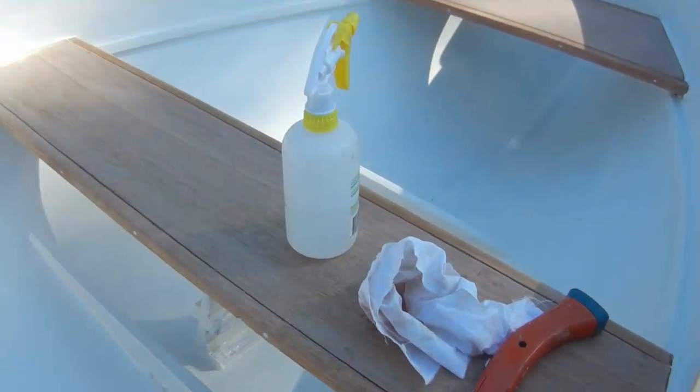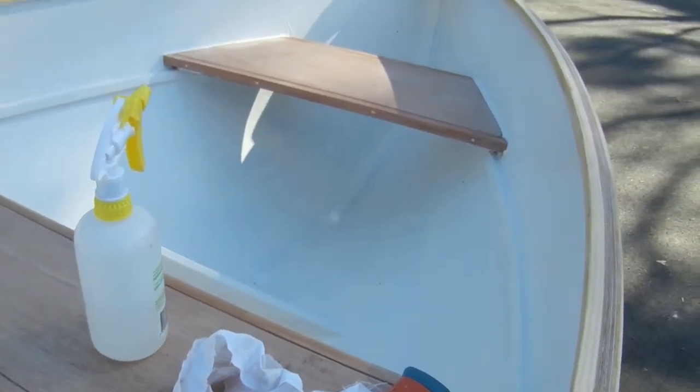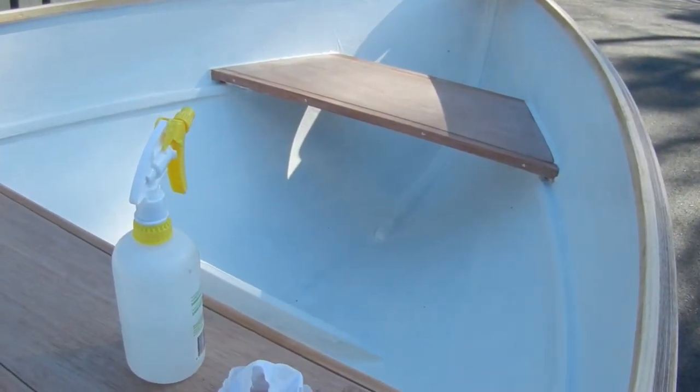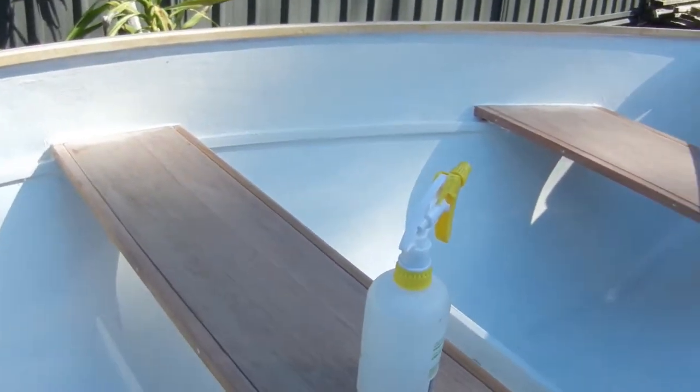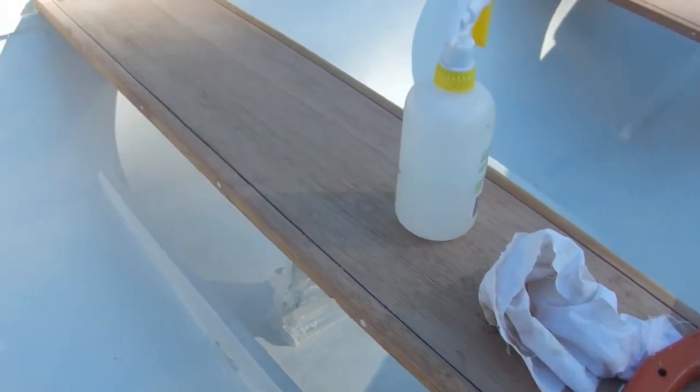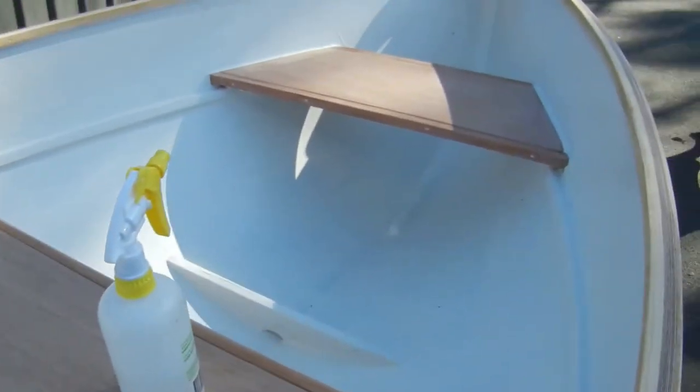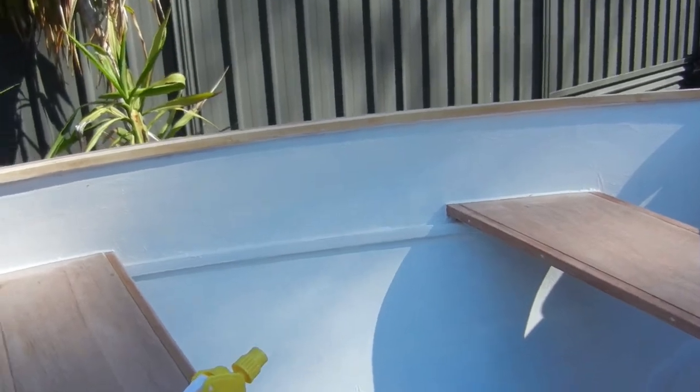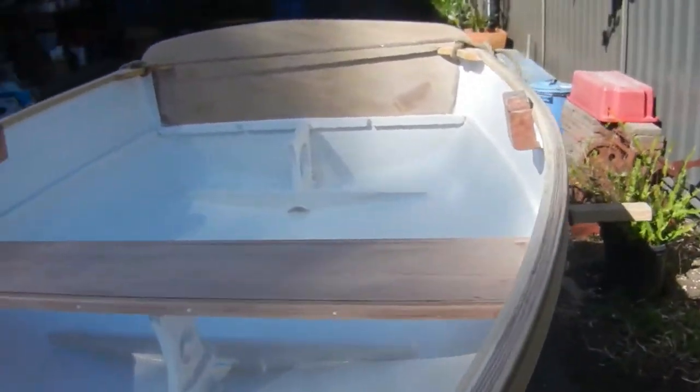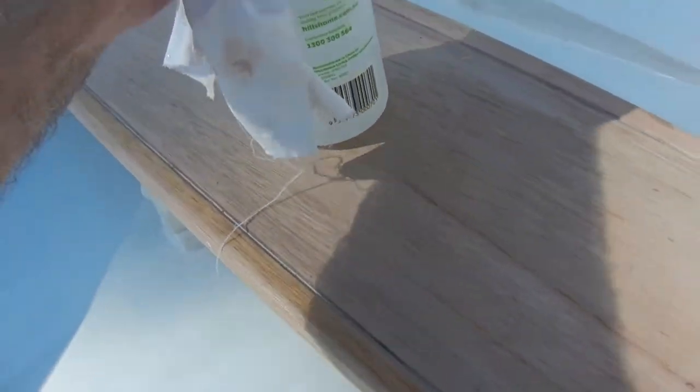I've cleaned all the undercoat off all the vertical, off all the timber parts, so they're ready to coat. All they need is a sand. I'm going to get in and coat the seats now and make them look respectable. It's just easy to put the metho on the rag and give it a good wipe. It's gone.